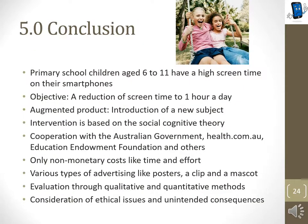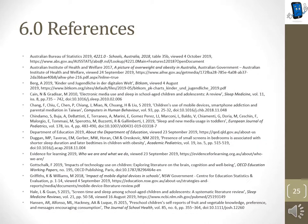To sum up, Australian primary school children aged 6 to 11 have high screen times on smartphones. With the help of our intervention — the creation of a new subject based on the social cognitive theory — we will modify their behaviour and reduce their screen time. Largely respected organisations like the Australian Government and the Education Endowment Foundation support the development of our intervention. The campaign has only non-monetary costs to reduce barriers for the customer, is carried out at primary schools, and features a wide range of advertisements like posters and clips. Quantitative and qualitative methods are used to evaluate results, and justified solutions for ethical considerations and unintended consequences have been made. Thank you for listening and I hope we will work together to ensure these changes are made for a better future.